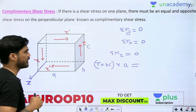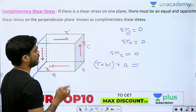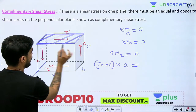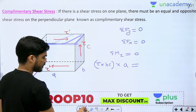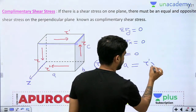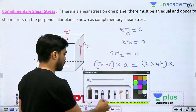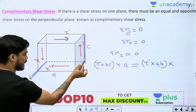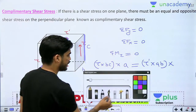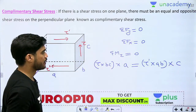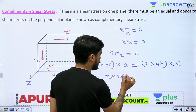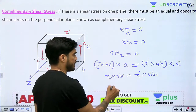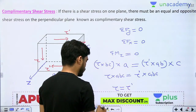Equal to that, what will be the moment of this force? The force will be tau dash multiplied by this area. What will be this area? It is A into B. So, it will be tau dash multiplied by AB. What is the distance of this force from this axis? It is C. So, the moment is tau dash into AB into C. From here, tau into ABC equals tau dash into ABC. ABC cancels, so tau equals tau dash.